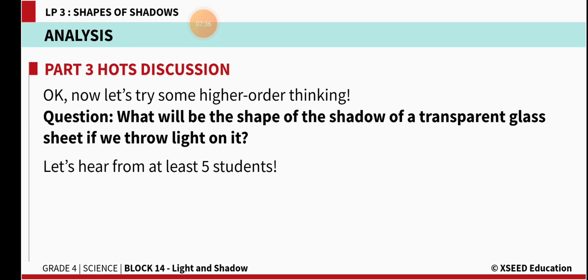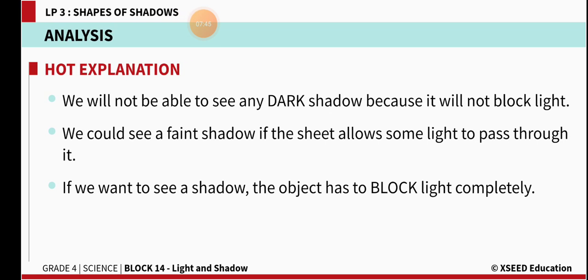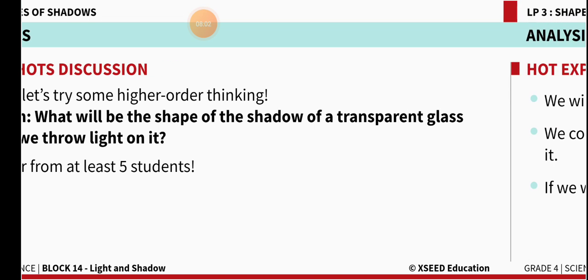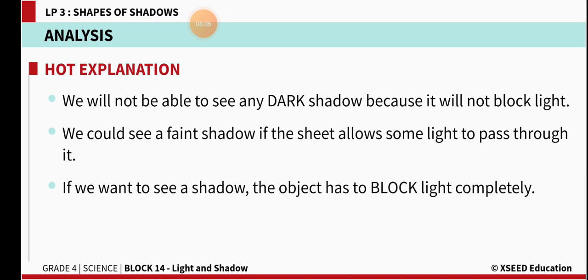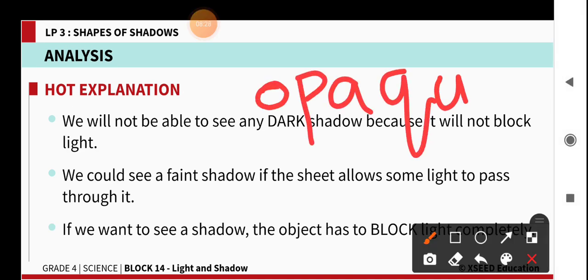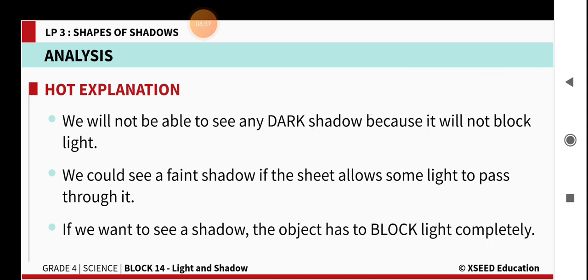What will be the shape of the shadow of a transparent glass sheet if we throw light on it? We will not be able to see any dark shadow because it will not block the light — a transparent sheet allows light to travel through it. To form a shadow, the object must be opaque and must not allow light to pass through it. We could see only a faint shadow if the sheet allows some light to pass. For a clear shadow, the object has to block the light completely. Such objects are called opaque objects, and only opaque objects form shadows.